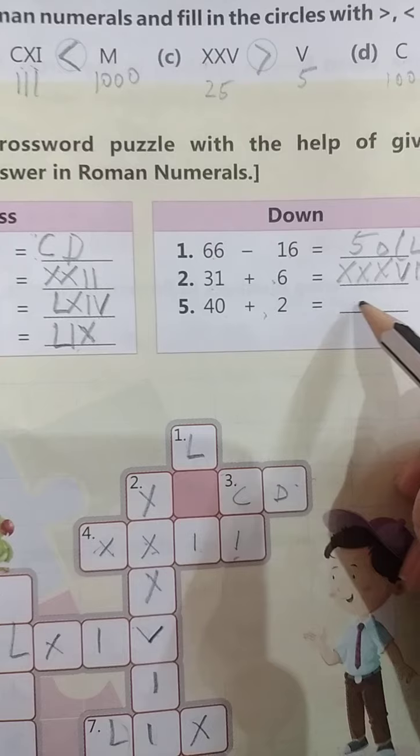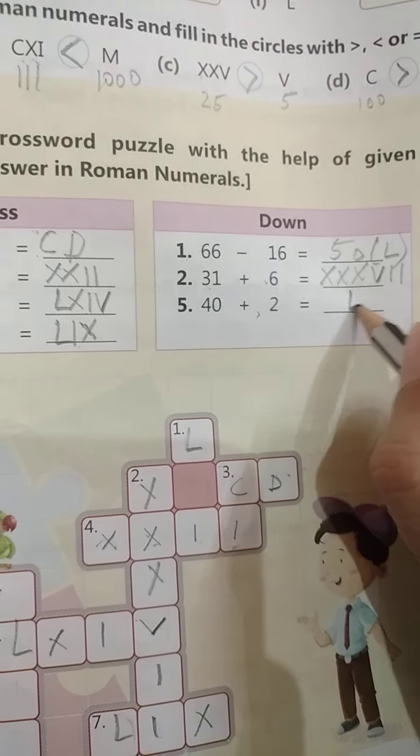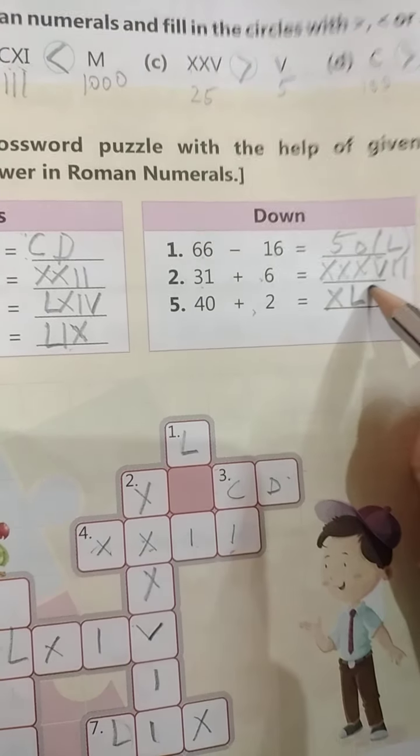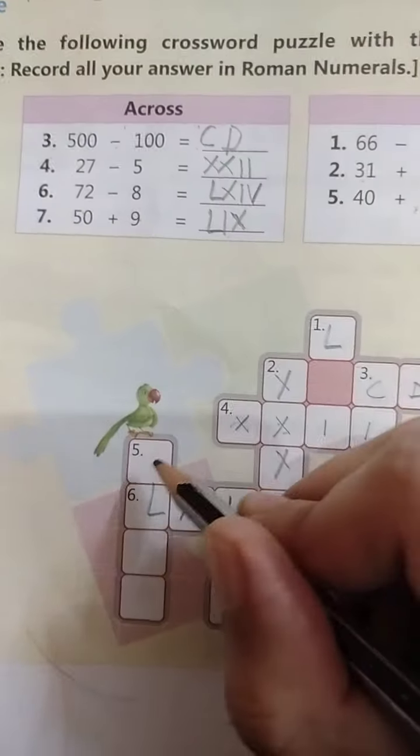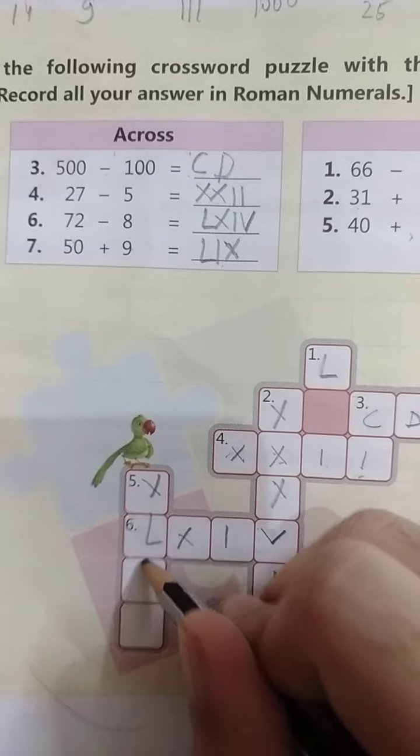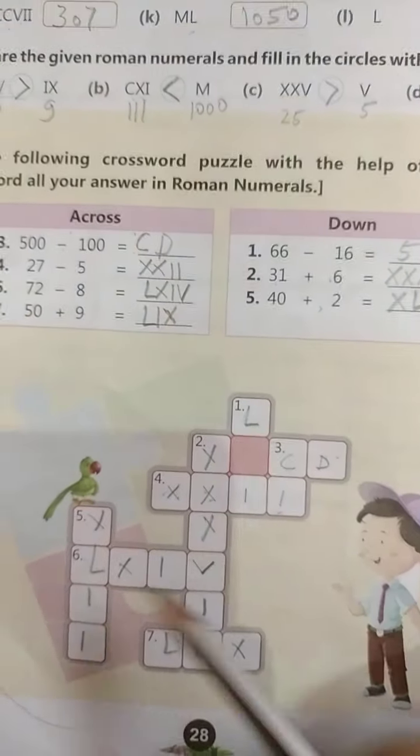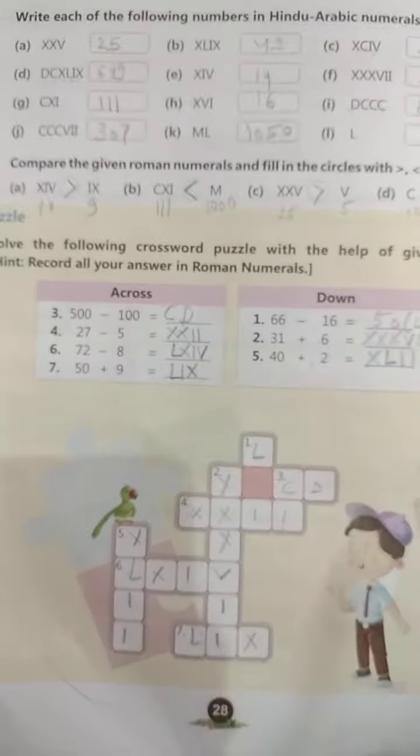42, 42. 42 ke liye kya karenge? 50 mein se 10 subtract karenge, plus 2 karenge. X L I I. Aise represent hoga. X L I I. Download puzzle hai 5th wala. To yeh aapka puzzle fill ho gaya.